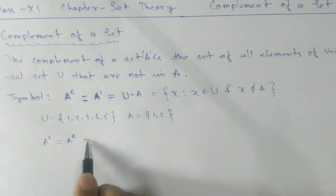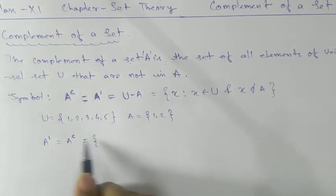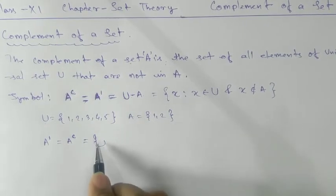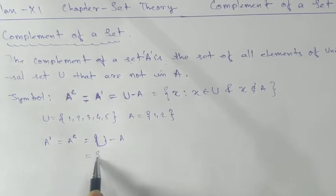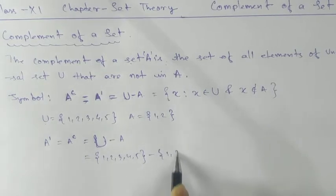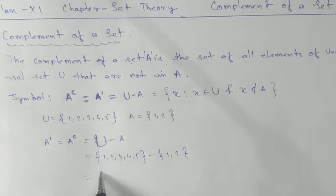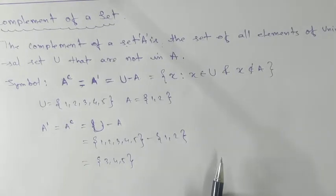So here, universal set minus A can be written as {1, 2, 3, 4, 5} minus {1, 2}. That means except 1 and 2, whatever remains in your universal set — that will be your complement of A, which is {3, 4, 5}. This is the definition of complement of A.